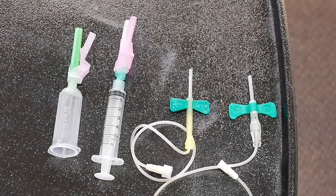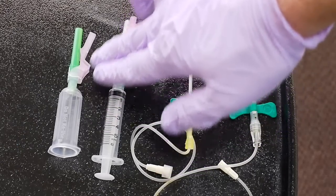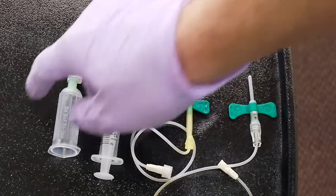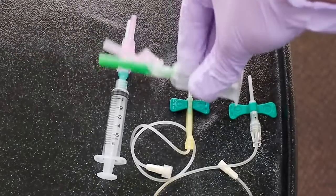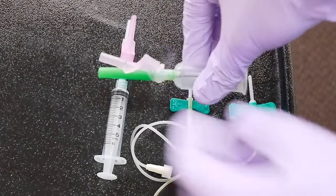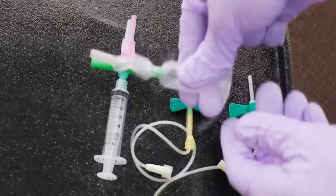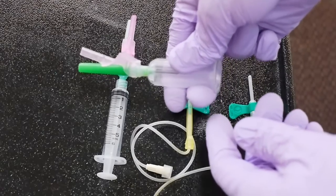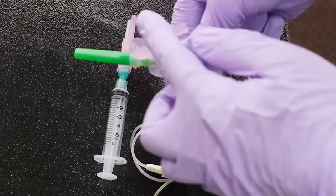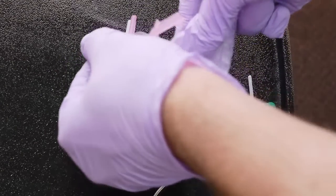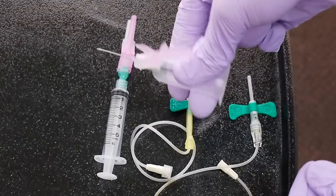So the first one we're going to talk about is the one for the ETS system, evacuated tube system. You can see that the needle is capped and the safety lock is in the up position. Normally what we would do is pull back on the safety lock, take the cap off, and then we would be ready to do the blood draw.